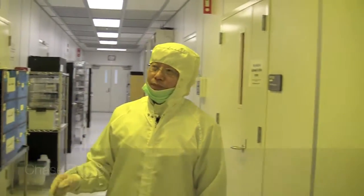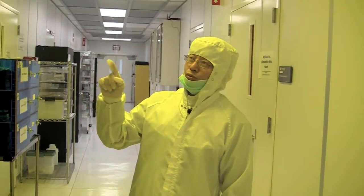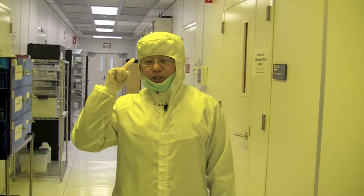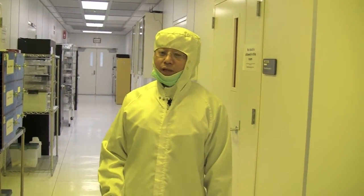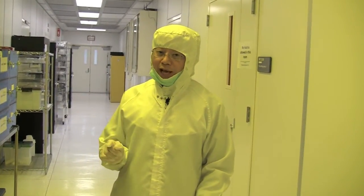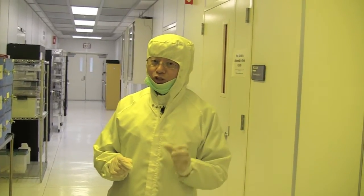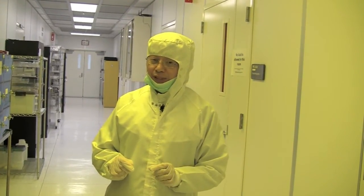So this is the chase room. The room number is 2337. Keep this in mind. The chase room is to store chemical gases, water supply, chiller, vacuum pumps, and so on.